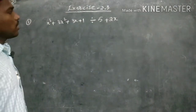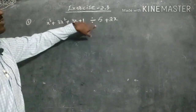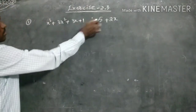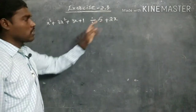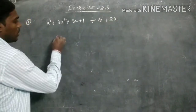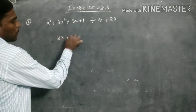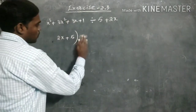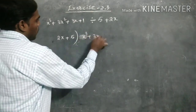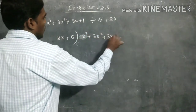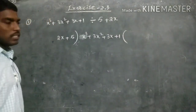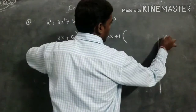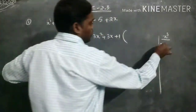The next question: the same polynomial is divisible by 2x minus 1. First, we should arrange the terms in order. We arrange the polynomial in order: x³ plus 3x² plus 3x plus 1.